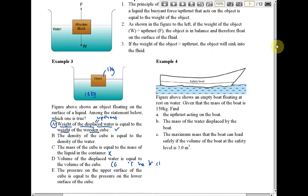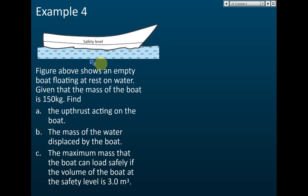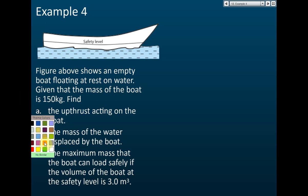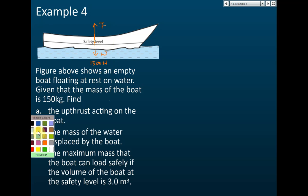According to the Principle of Flotation, the weight of the displaced water — which is the upthrust — equals the weight of the wooden cube. Example 4: a figure shows an empty boat floating at rest. At rest means it is not moving and all forces are in equilibrium. The two forces acting on the boat are the upthrust and the weight. The mass of the boat is given as 150 kg.